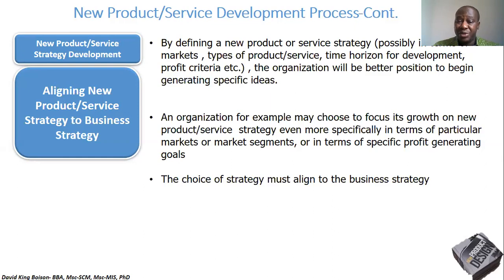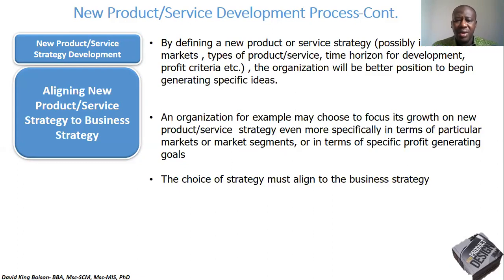For instance, producing quality water — whether sachet water or bottled water — because the organization has said it wants to be the leader. You cannot have a different vision and have a different product or service; if that happens, we will be having strategic misalignment, and that will not endure to the benefit of the organization. The choice of the organization's strategy must align with its vision and the product or service it wants to produce. Thank you very much, I will see you in the next lecture.